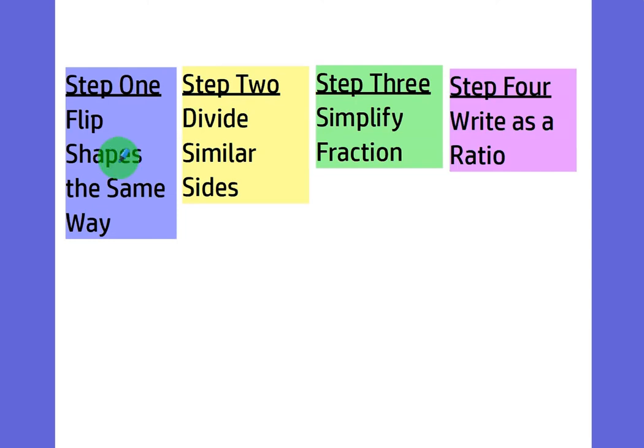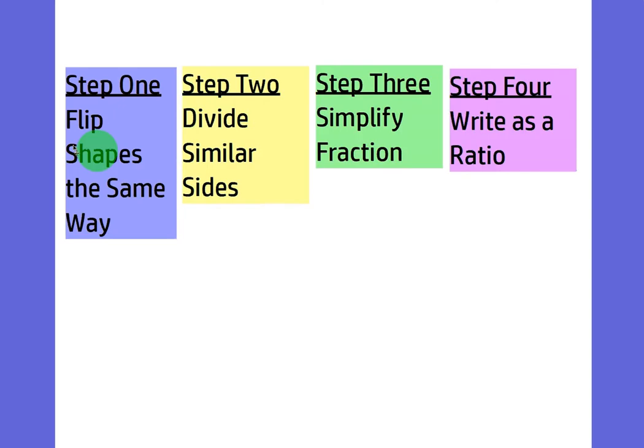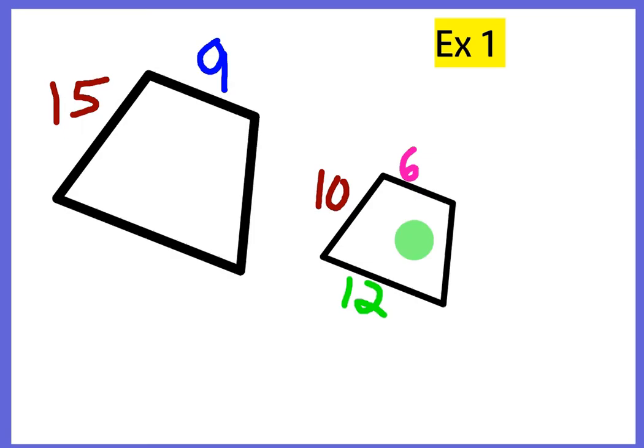Let's go ahead and take a little look at the steps to solve this problem. First thing we're going to do is flip the shapes the same way. And like I said, for this particular example, they are already flipped the same way. They're pointed the same way, rotated the same way. So we're going to check step one off. Step two, we're going to divide the similar sides. So real quick, a lot of times I just like to look at the shorter side. Okay, now, in this case, you could use 10 and 15, or you can use 6 and 9.